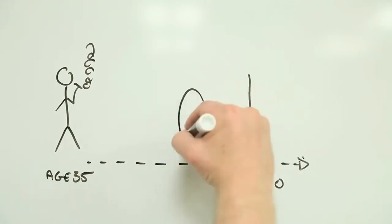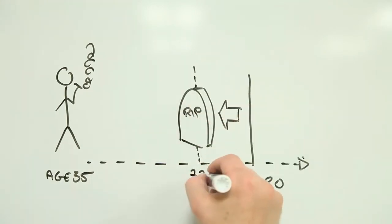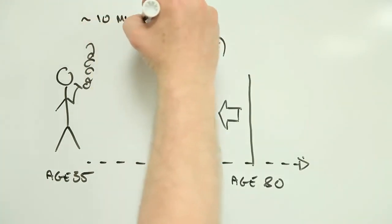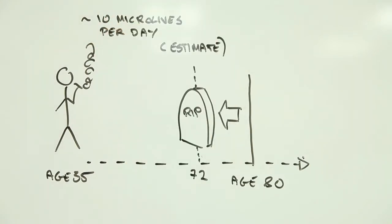But racking up negative 10 Microlives a day, which you could be doing if you smoke 15 to 24 cigarettes per day for example, is like taking five hours off your life every 24 hours you live.